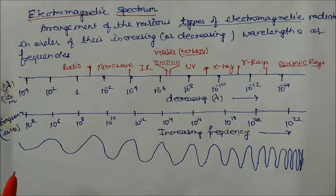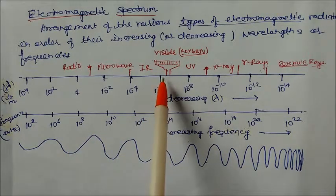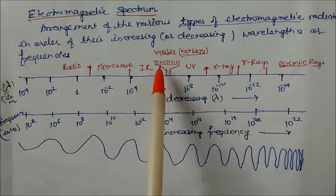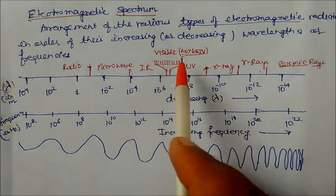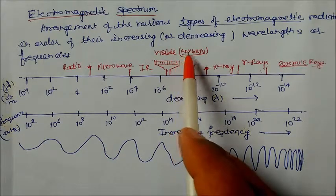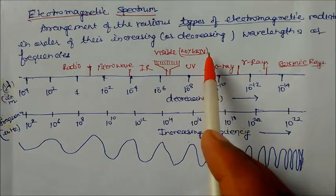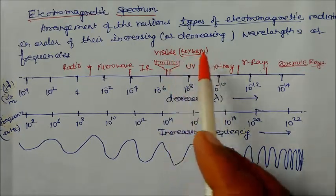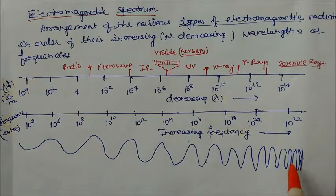The frequency of radio waves is very low — about 10 to the power 6 to 8 hertz. Visible radiation falls in the range of 10 to the power 14 to 15 hertz, with wavelengths from 400 to 700 nanometers. The colors are: Red, Orange, Yellow, Green, Blue, Indigo, Violet — remembered by the mnemonic ROYGBIV. Frequency decreases while wavelength increases across this diagram.